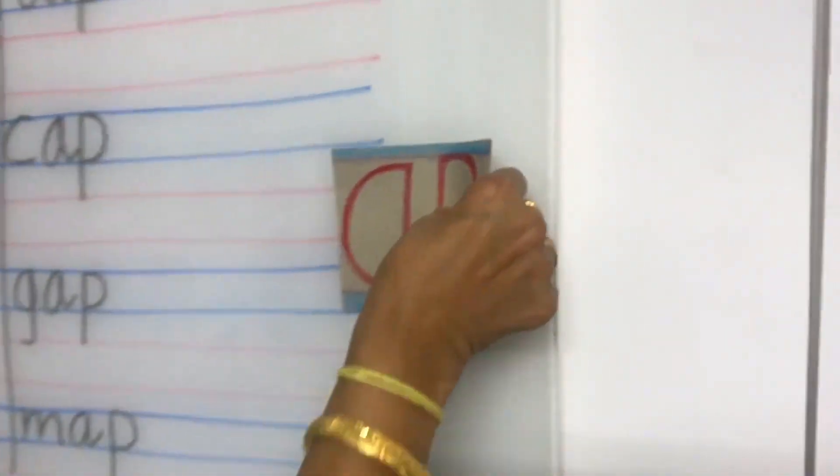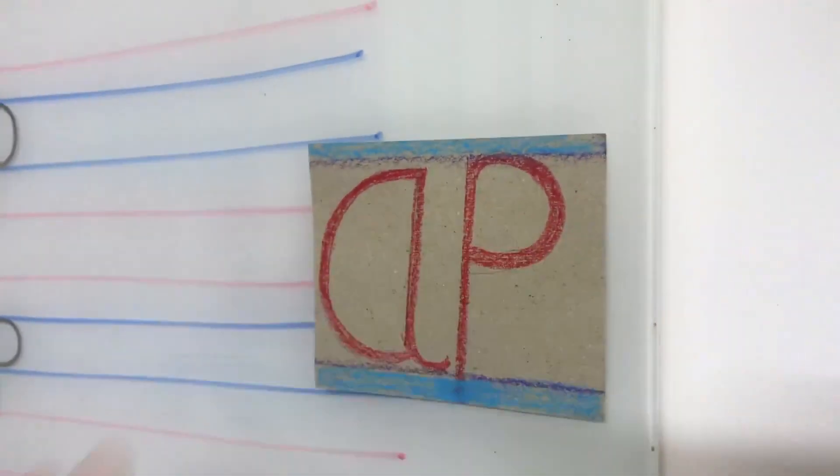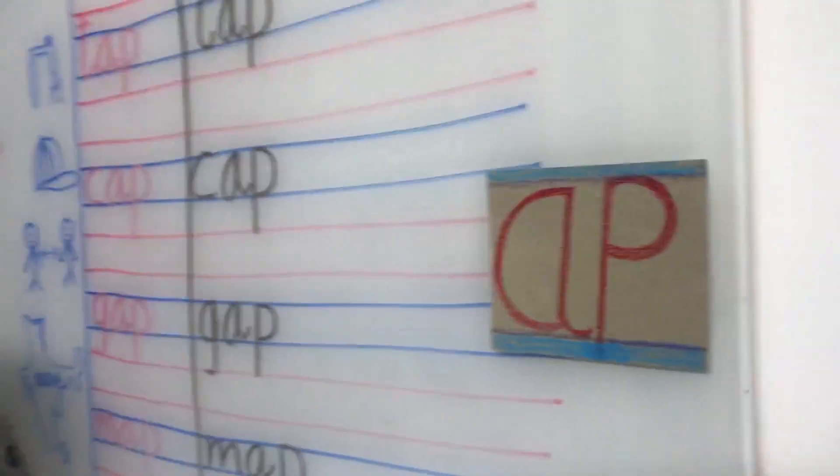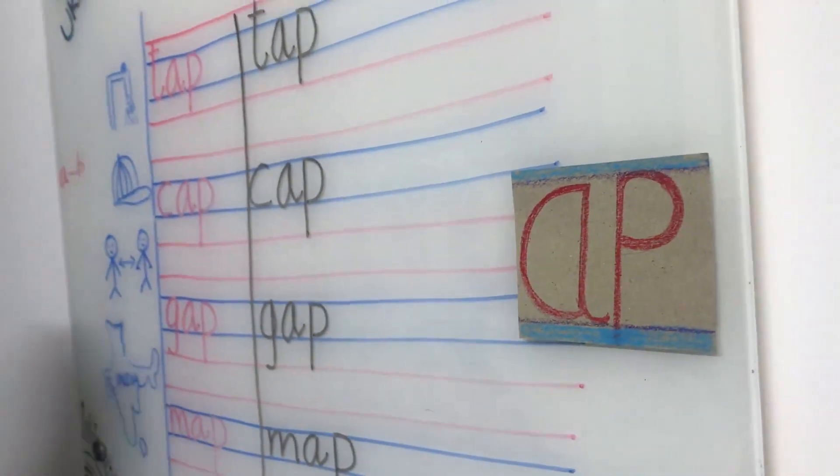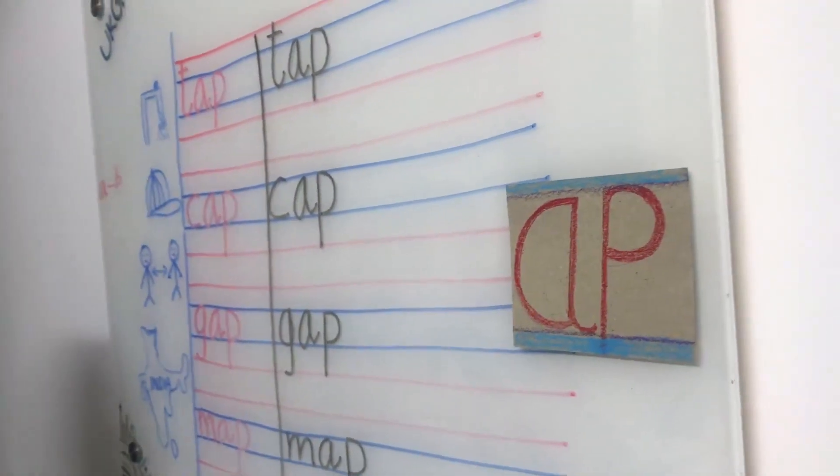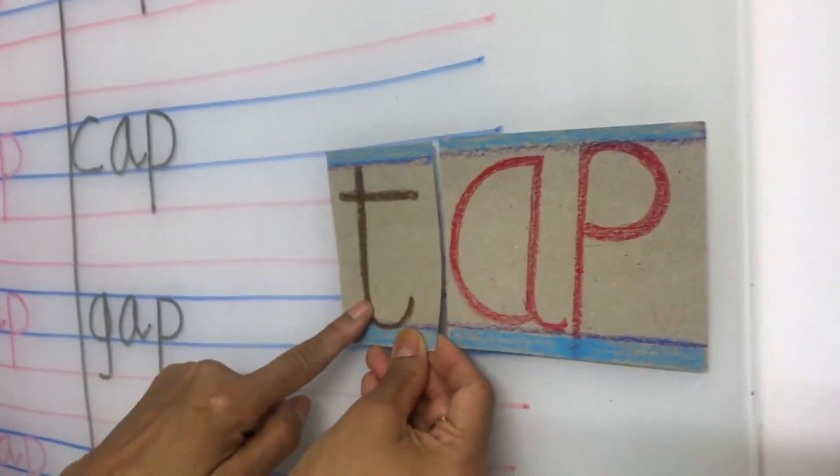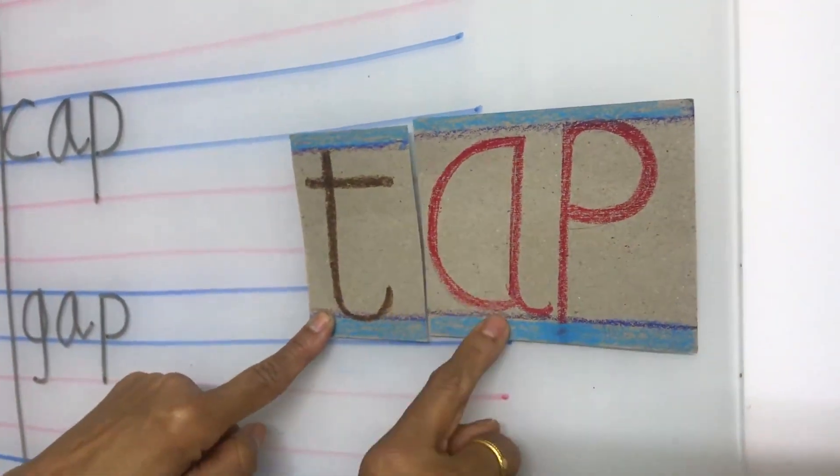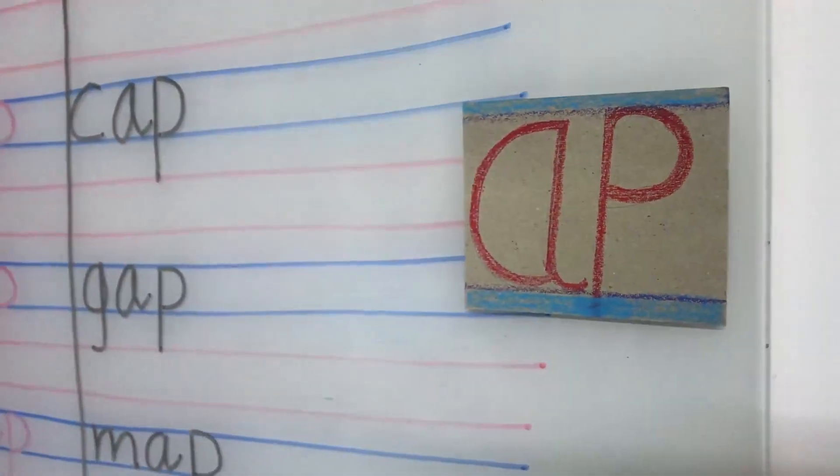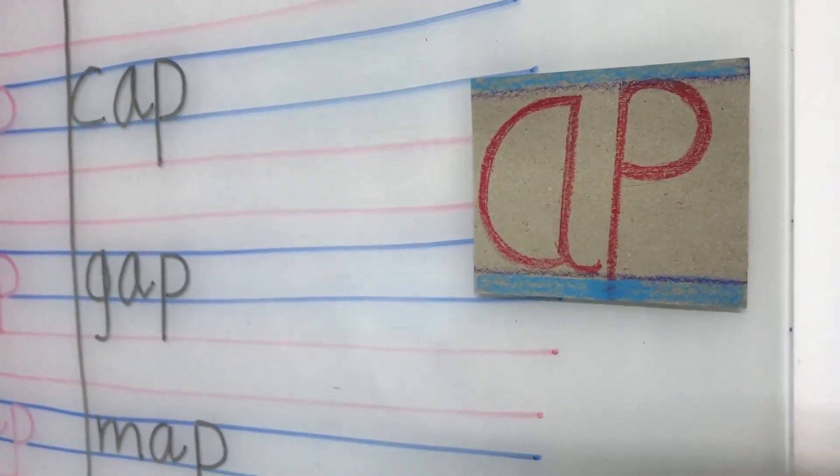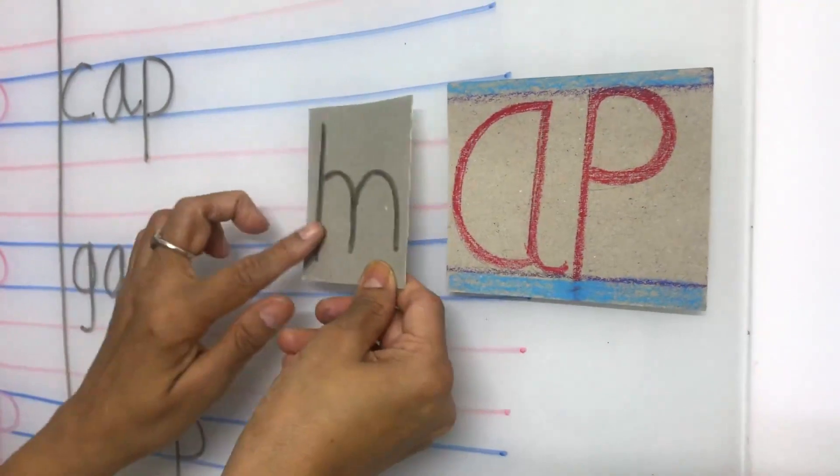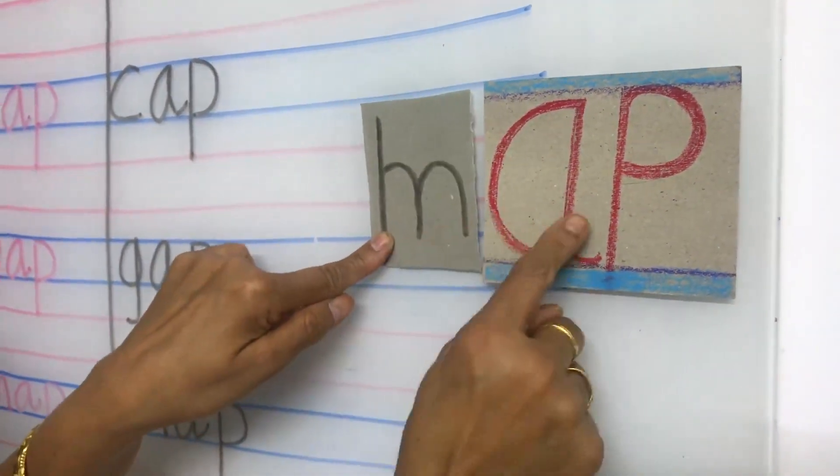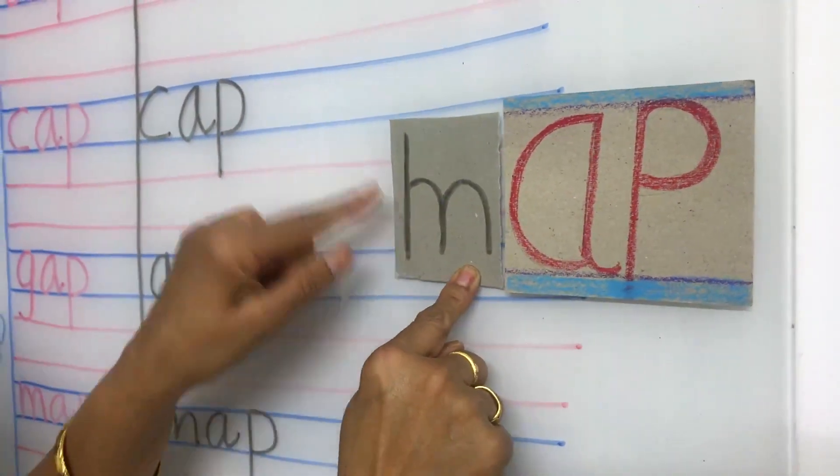See here, children. What is this? This is A, P. When you join T letter for this AP, it will become TAP. Next, this is letter M. When you join M letter to AP, it will become MAP.